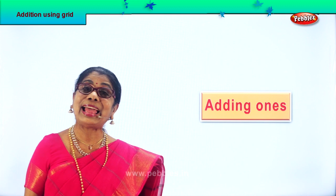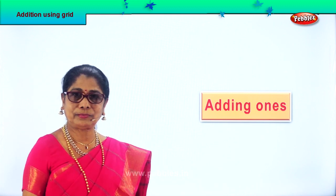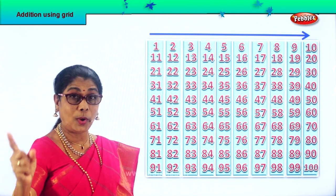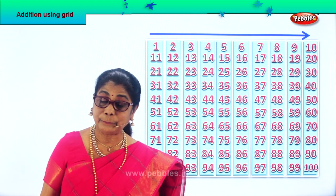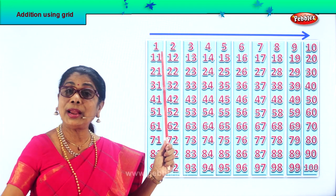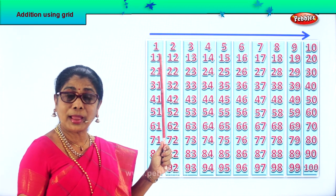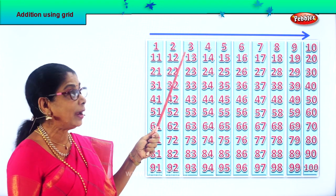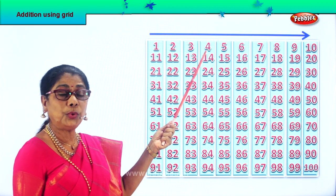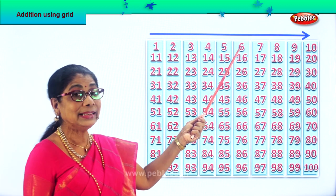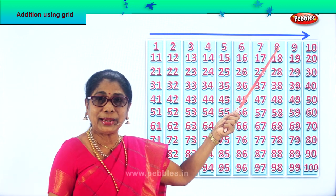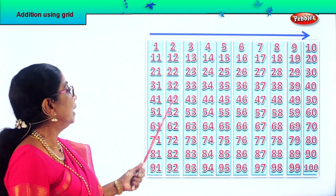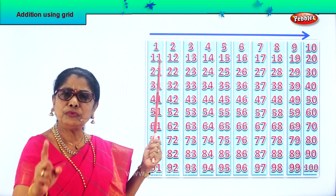Now let's move on to adding ones — adding one each time. Let's see what you get. Look at the grid here. Now to 1, you add one more: 2. Add one more: 1 plus 1 is 2. Very good. 2 plus 1 is 3. 3 plus 1 is 4. 4 plus 1 is 5. 5 plus 1 is 6. 6 plus 1 is 7. 7 plus 1 is 8. 8 plus 1 is 9. 9 plus 1 is 10. Very good.